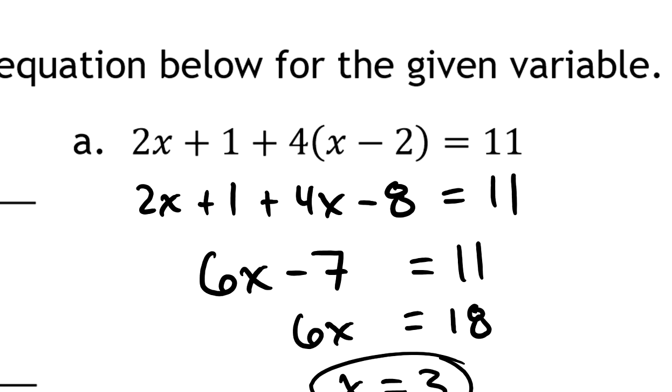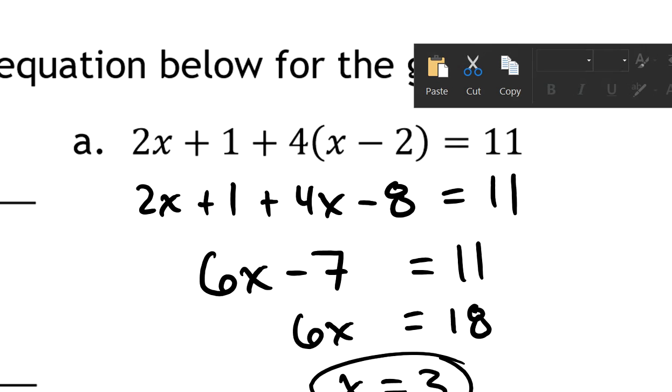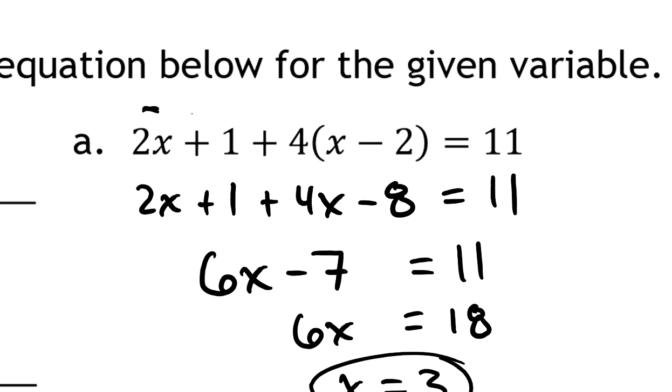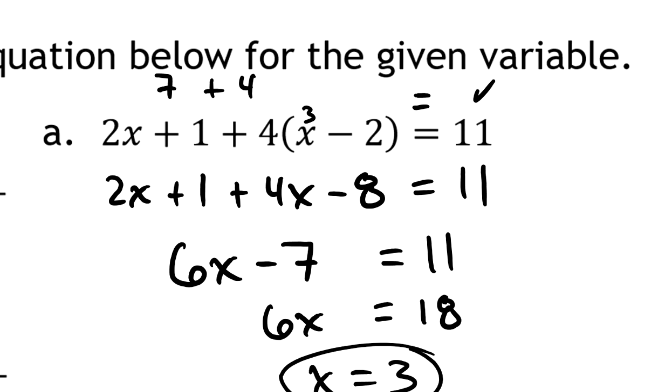Probably worth it to confirm that solution, especially if you want to guarantee you've got the point. 2 times 3 is 6, and 6 plus 1 is 7. Plus, so if I put a 3 here, 3 minus 2 is a 1. And 1 times 4 is 4. So yeah, 7 plus 4 is indeed 11. So when x is 3, it definitely makes both the left-hand side become 11 and the right-hand side already is. So it's a value of the variable that makes this statement true.